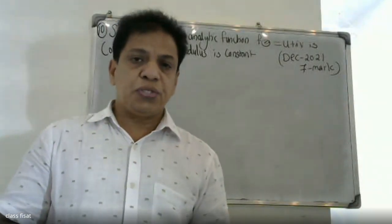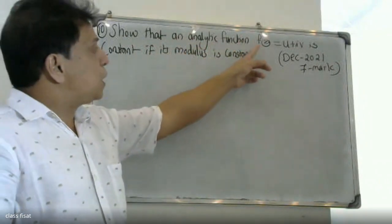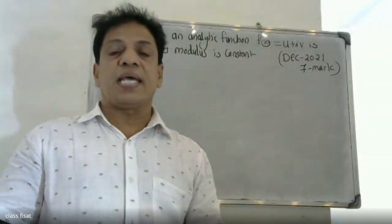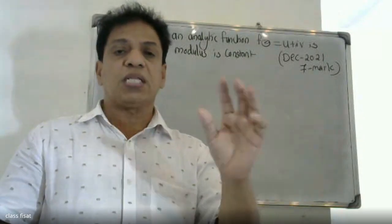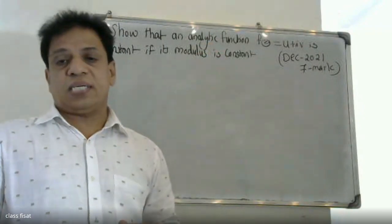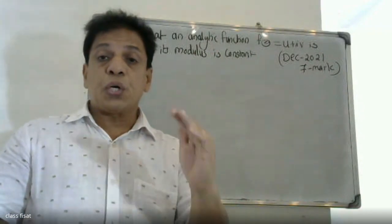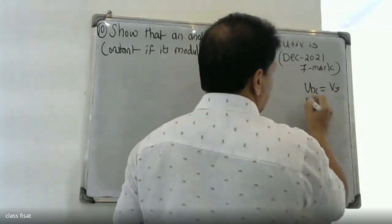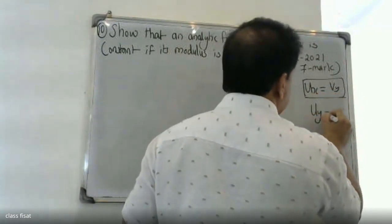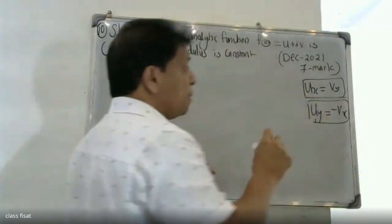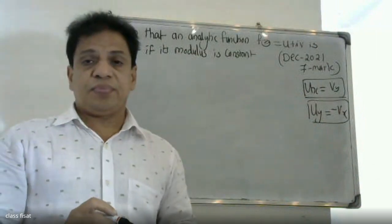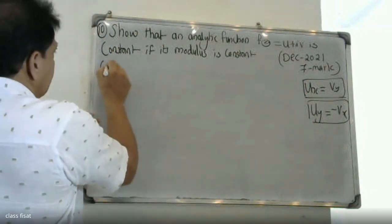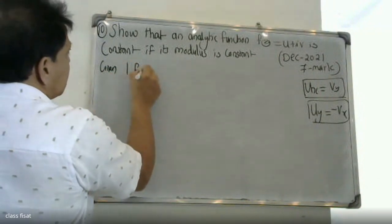Good morning students. We need to show that an analytic function f(z) = u + iv is constant if its modulus is constant. To prove this, since f(z) is analytic, it must satisfy the Cauchy-Riemann equations. The Cauchy-Riemann equations are: ux = vy and uy = -vx. If both equations are satisfied, we can say the given function is analytic.